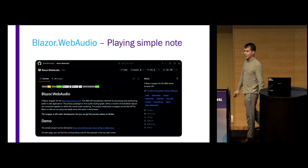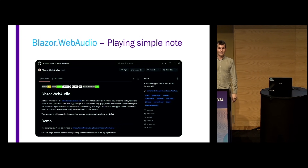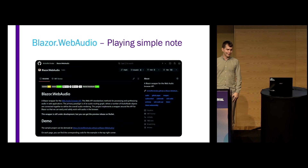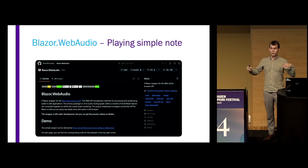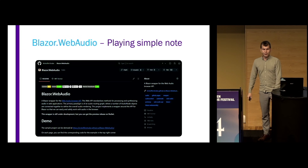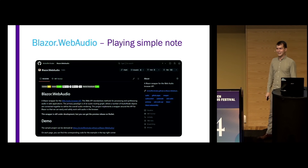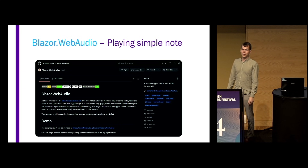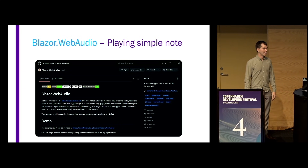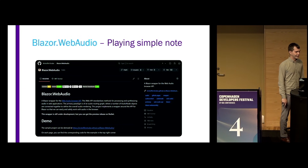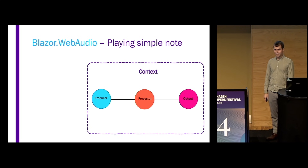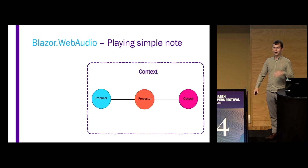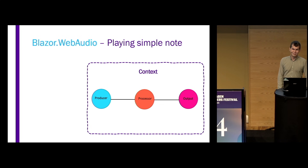And then we're going to talk about Blazor Web Audio, which is my library for working with the Web Audio API in Blazor. Basically this wraps the JavaScript API that is available in all new browsers, in Blazor, so that you can write C# in order to generate some sound. Now we're going to go through the most basic example that uses some of the different nodes — a producer, a processor, and an output.